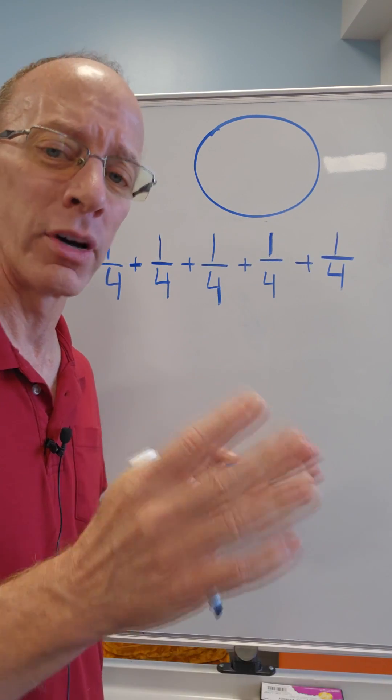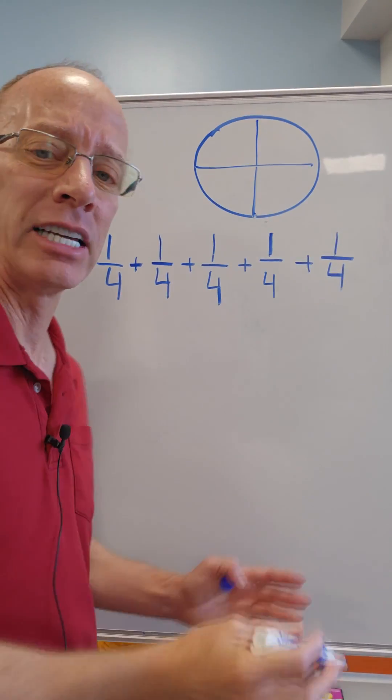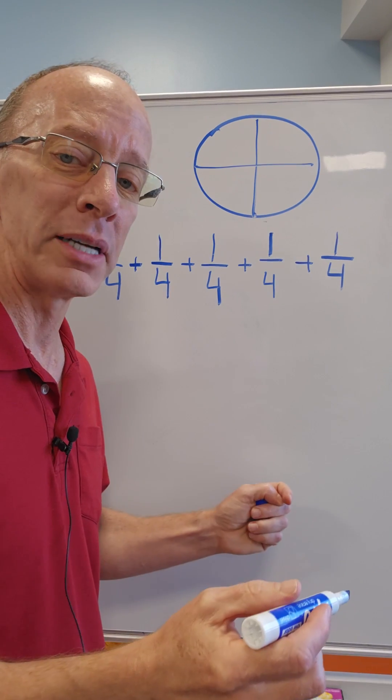I'm going to take that pizza. I'm going to cut it into four equal parts. Put a line down here, put a line down here. Each of these parts is equal to one-fourth. So if I have this piece of pizza right there, that is one-fourth a piece of pizza.